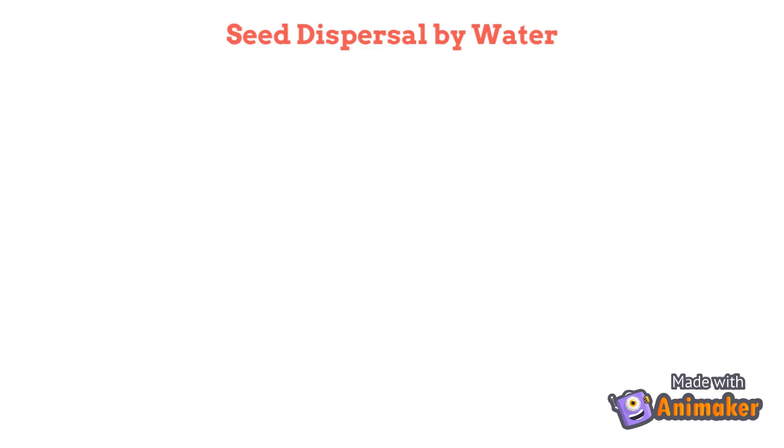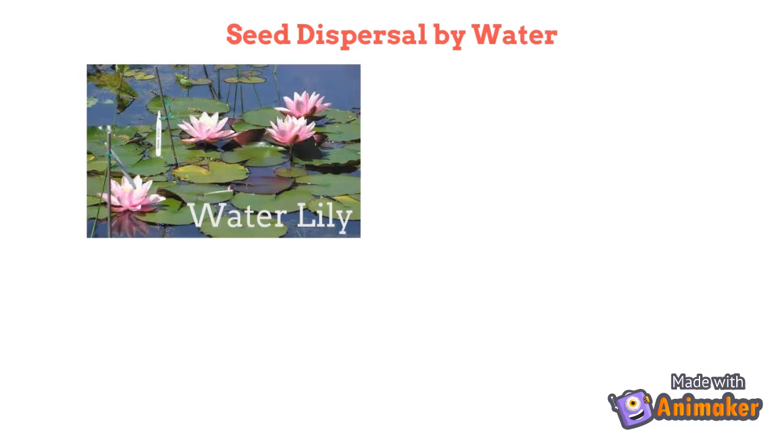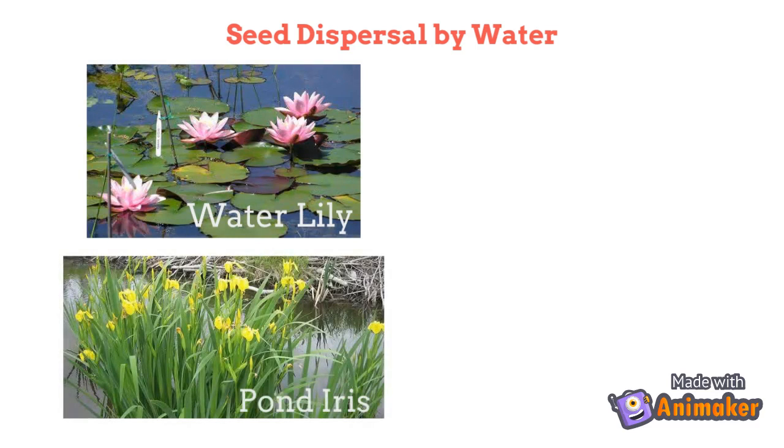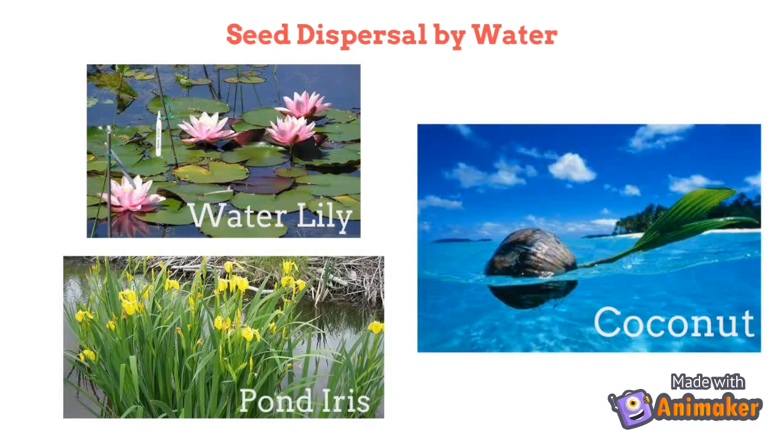Fruits which float, such as those of the water lily and pond iris, are carried by water. Coconuts can also travel for thousands of kilometers across seas and oceans.